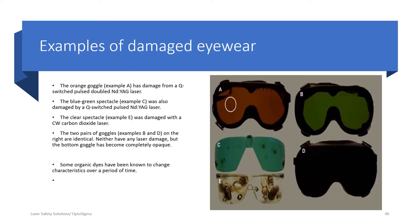Here are photos of eyewear damaged due to different laser exposures. The most interesting is pair D, which over time has gotten darker — we call this bleaching. While the optical density has not changed, the visible light transmittance has gotten worse and worse, making the pair essentially unusable. This is due to UV exposure over a period of time, usually years.